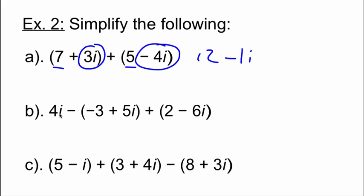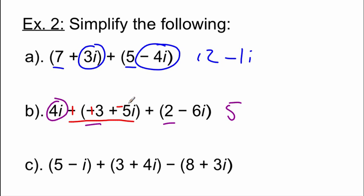In example b, we've got four i minus the quantity negative three plus five i, then we add two minus six i. I'll distribute the negative through the middle group first. The real pieces are positive three and positive two, which combine to five. For the imaginary pieces, four i, negative five i, and negative six i: four i plus negative five i is negative one i, then subtracting six more i gives negative seven i. So the result is five minus seven i.